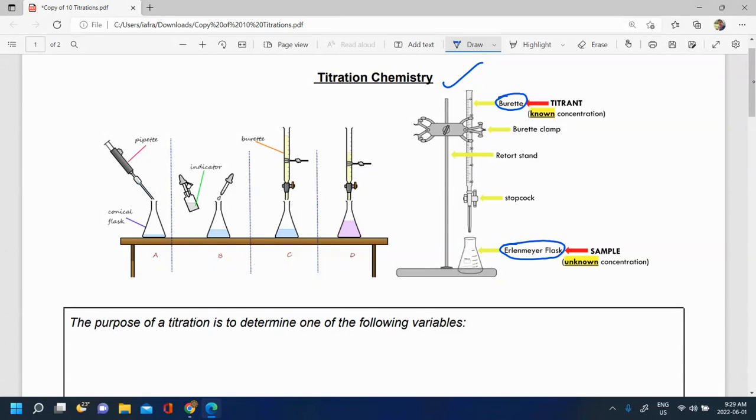The idea is that within the Erlenmeyer flask we put a substance with unknown concentration. So we don't know its concentration. For example it might be an acid, it might be some HCl with an unknown molarity. It doesn't have to be HCl, it could be some other acid or some other substance.